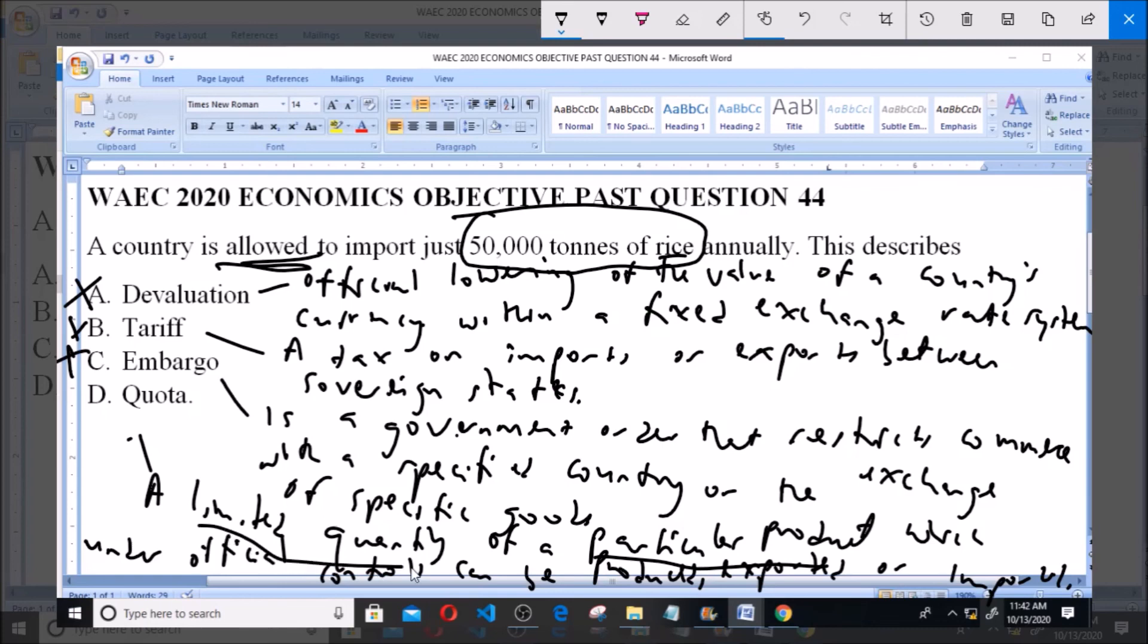So it is a limited quantity that can be imported. So option D quota is the correct answer to this question.